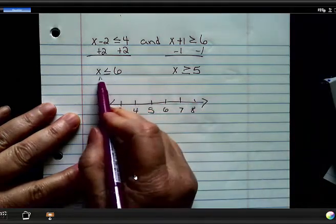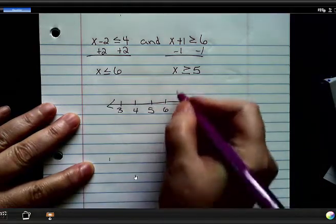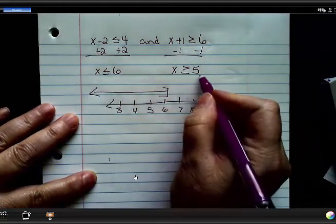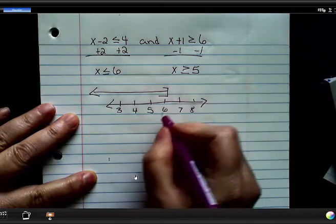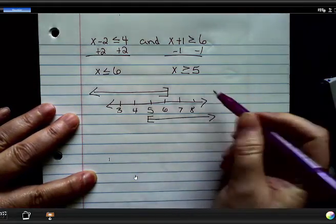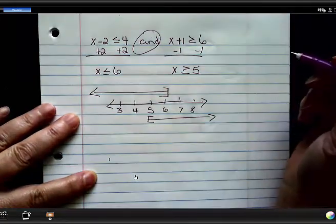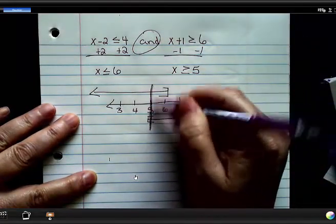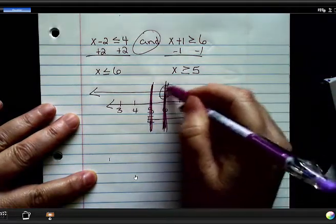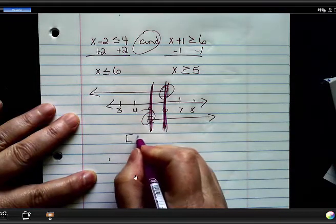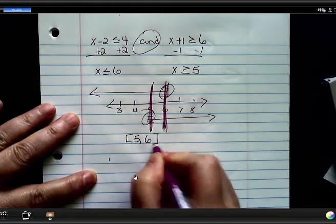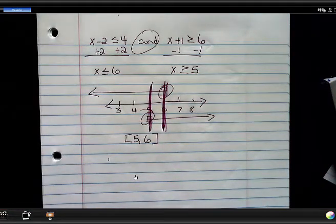So x is less than or equal to 6. That would be a bracket going this way. This says x is greater than or equal to 5, so it would be a bracket going this way. And means intersection. What do they both have in common? So it's going from here to here that they both have in common, and they both have the brackets. So your answer would actually be where does it start and where does it end? That's where the two intersect.